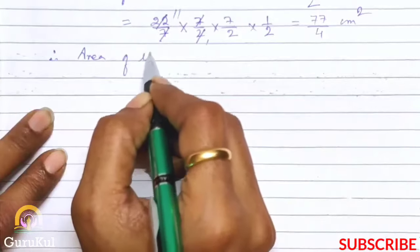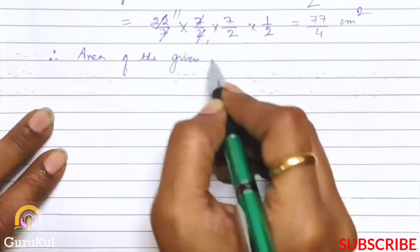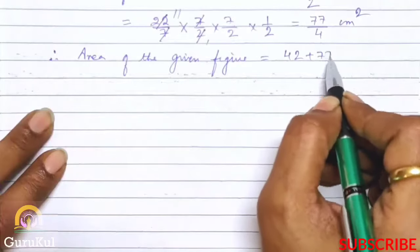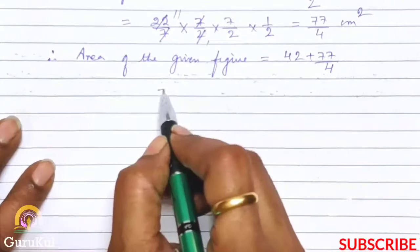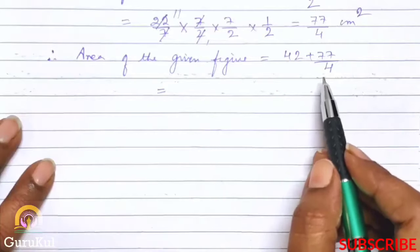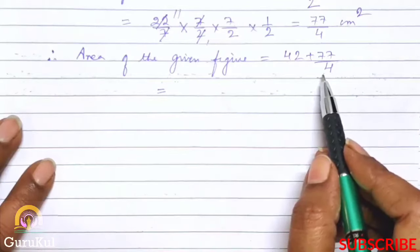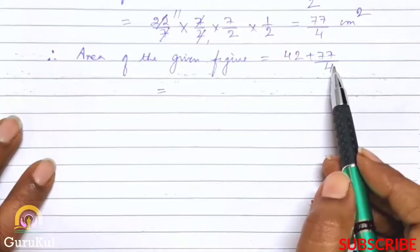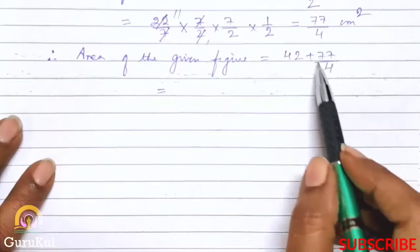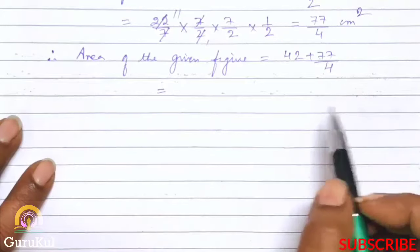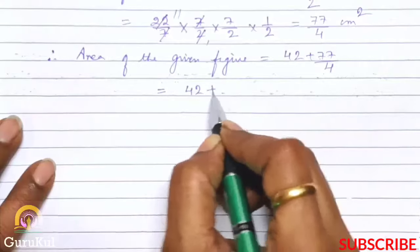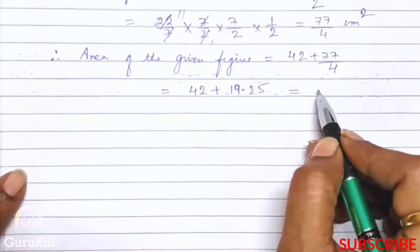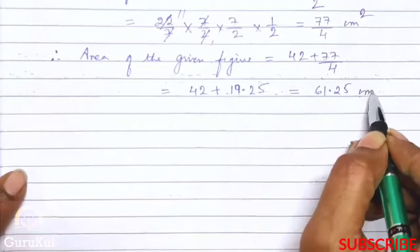Therefore area of the given figure is equal to 42 plus 77 by 4. Ab yeh solve karne ka do ways hain - ek to LCM nikaalein, ya 77 by 4 ko divide karke answer ko decimal mein laayein. Jab hum 77 by 4 ko divide karte hain, the answer is 19.25, and adding both we get the area 61.25 cm².